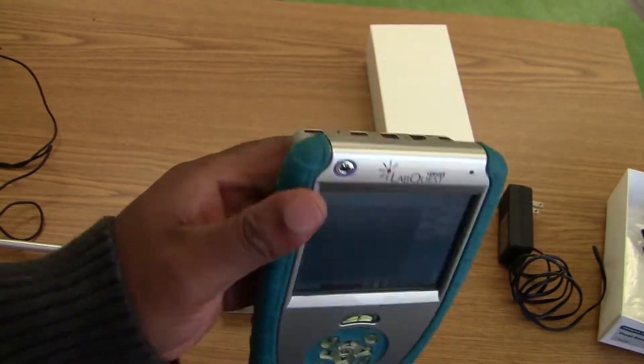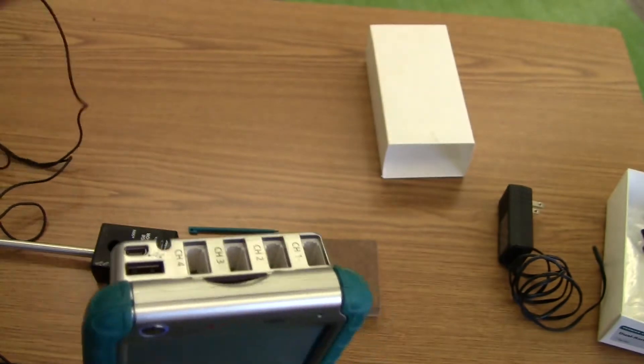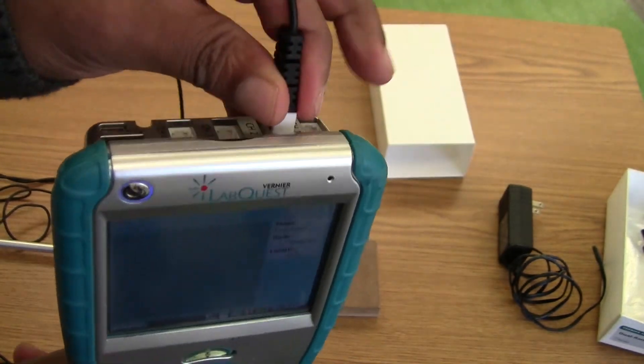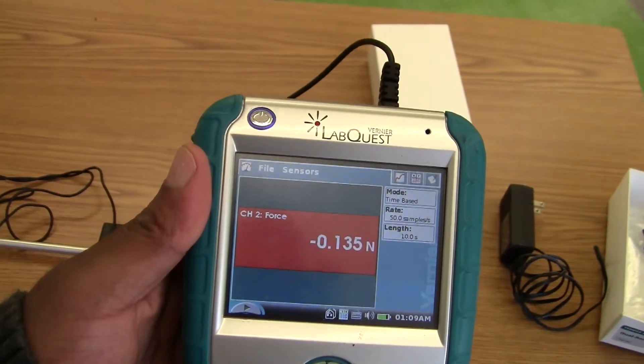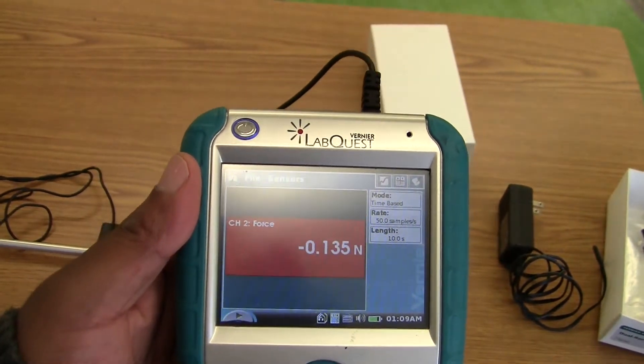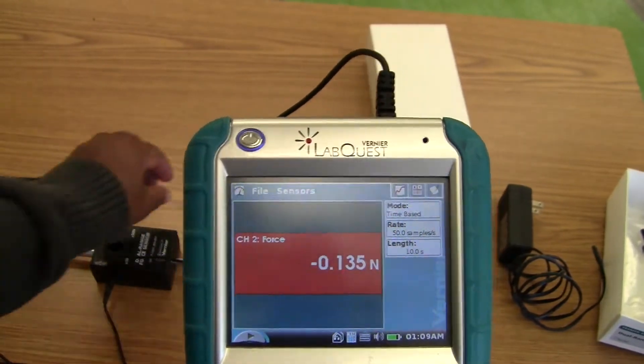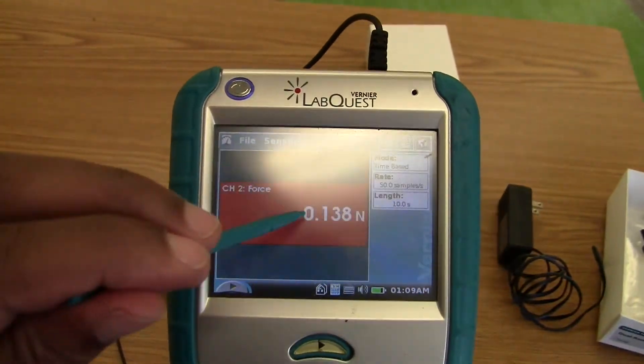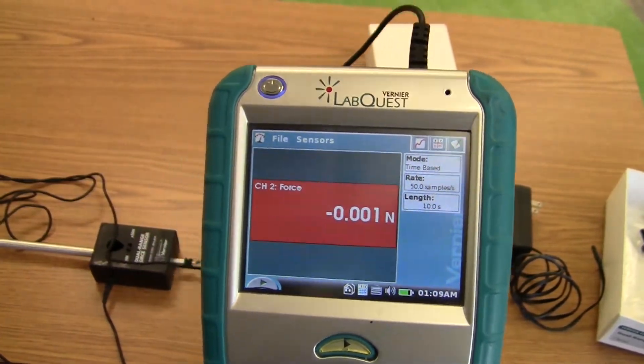We have our LabQuest. On the top of the LabQuest is where we can plug our sensors in. It doesn't matter which channel you plug it in, it should automatically detect the type of sensor. Notice it has detected a force meter or force sensor. We can zero it by clicking on the screen and pressing zero.